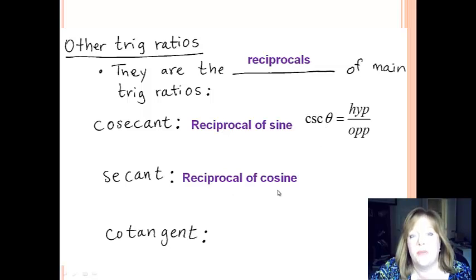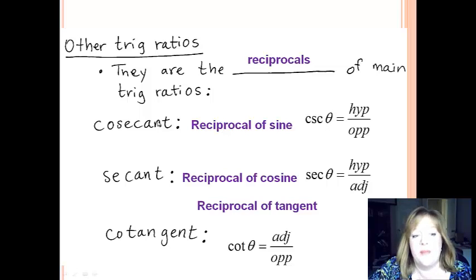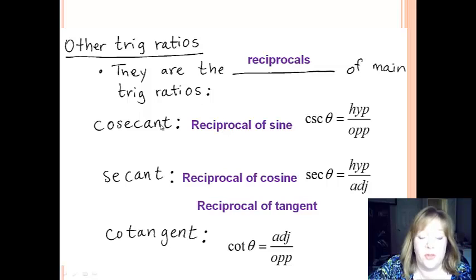Secant is the reciprocal of cosine. It's SEC of an angle equals hypotenuse over adjacent. So notice it just flipped. And cotangent is the reciprocal of tangent. So instead of being opposite over adjacent, cotangent is adjacent over opposite. When you're doing these trig ratios, don't forget to put the theta or the measure of the angle in there. That's very important. And remember which ones are reciprocals of which one.